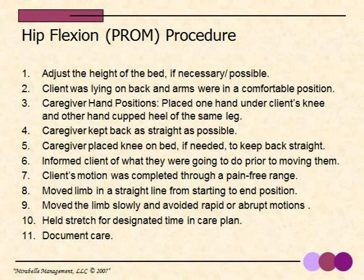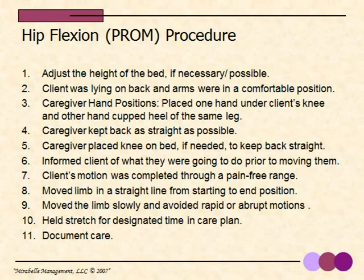Let's review the hip flexion procedure. One: adjust the height of the bed if necessary. Two: client lying on their back, arms in a comfortable position. Three: caregiver hand positions — one hand under the client's knee, the other cupping the heel of the same leg. Four: caregiver kept back as straight as possible. Five: caregiver placed knee on bed if needed. Six: inform the client prior to moving them. Seven: motion completed through a pain-free range. Eight: move the limb in a straight line. Nine: move slowly, avoid rapid motions. Ten: hold for the designated time. Eleven: document the care.